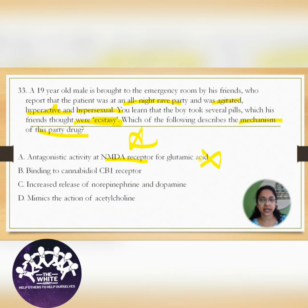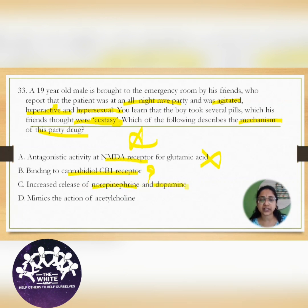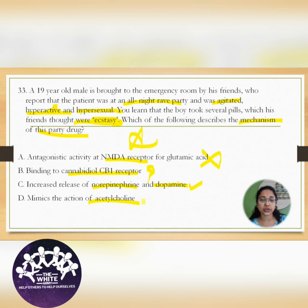Option B: binding to cannabidiol CB1 receptor — I have no idea about this, so let's keep it aside. Coming to Option C: increased release of norepinephrine and dopamine. Yes — hyperactivity, hypersexuality, and agitation can all be due to increased release of norepinephrine and dopamine. So this might be the answer. Option D: it mimics the action of acetylcholine — nicotine group of compounds mimic acetylcholine, so this is not the answer.